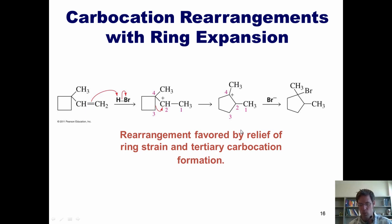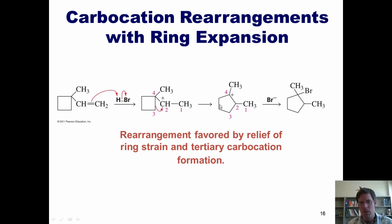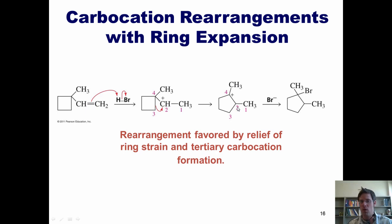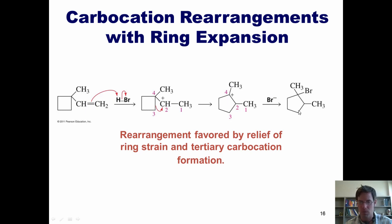Rearrangements can also result in a ring expansion. In this case, electrons come out and protonation gives the more stable secondary carbocation. If this ring opens up, it gives a 5-membered ring and a tertiary carbocation — favorable not only because of the more stable carbocation, but also because 5-membered rings are much more stable than 4-membered or 3-membered rings. The bromide comes into this carbocation intermediate and gives the major product.